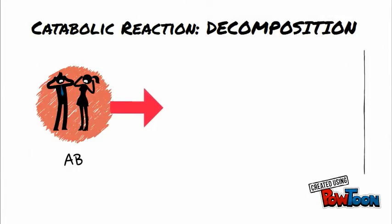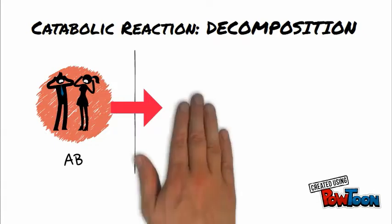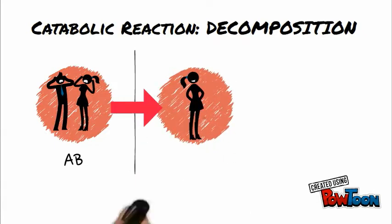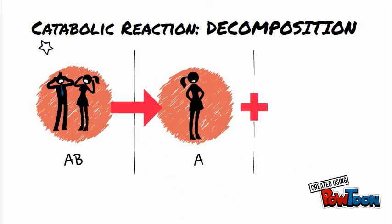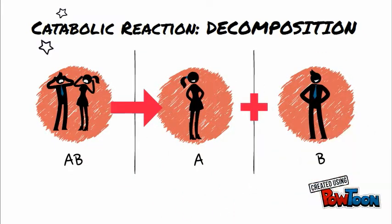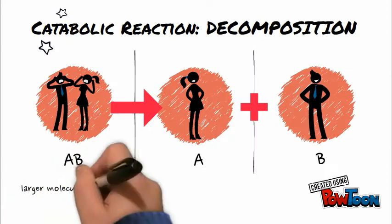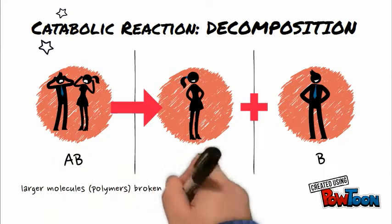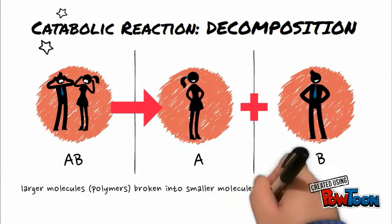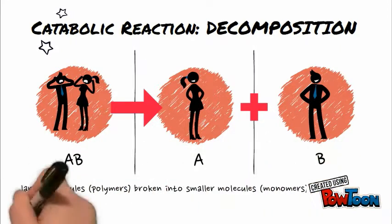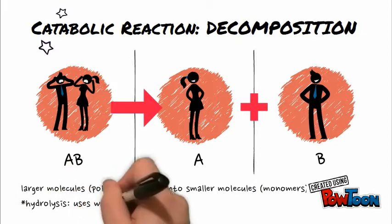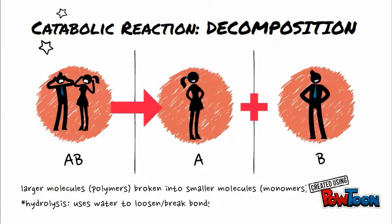Decomposition reactions are catabolic reactions — polymers are broken down into monomers. Think of it as such: if Brangelina got a divorce, they would then be individually known as Angelina and Brad. The breakdown of water into oxygen and hydrogen gas is a decomposition reaction.